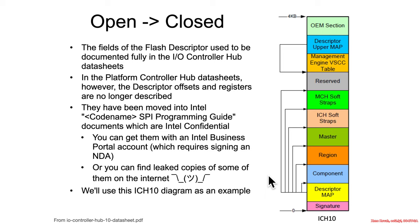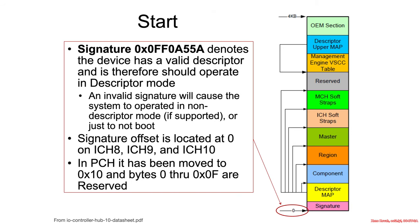Throughout the next sections, we're going to be using the ICH DH10 as the last sort of public documentation of how these work, and it's accurate enough for our purposes of understanding how the flash descriptor is laid out.